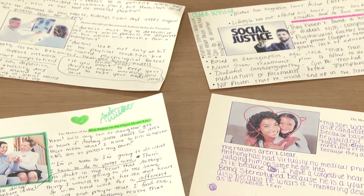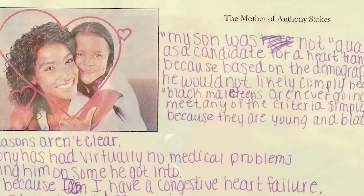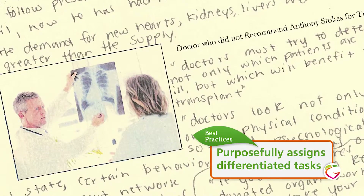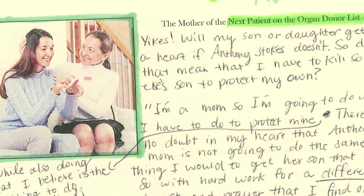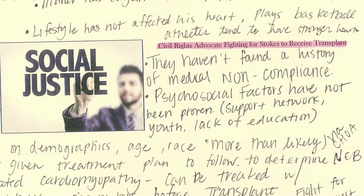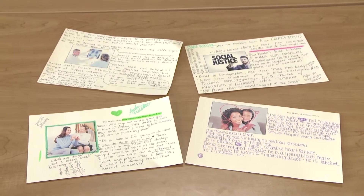Students were given a choice of — or rather assigned — one of four roles. Students were either the mother of Anthony Stokes advocating for her son to have the heart transplant, the doctor recommending the child not receive the transplant, the mother of a patient next in line who had complied with doctor's orders, or an SCLC advocate on behalf of the Stokes family. Each student was assigned a role based on the opposite of what they believed, so they could thoroughly provide a claim and a counterclaim for the writing portion.